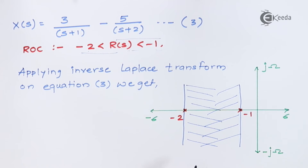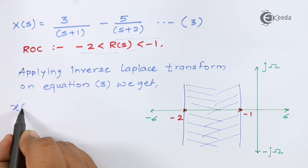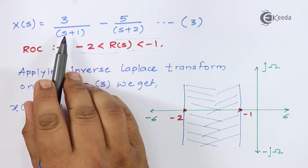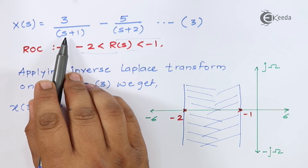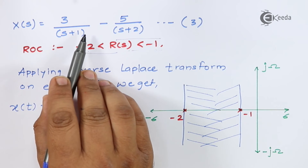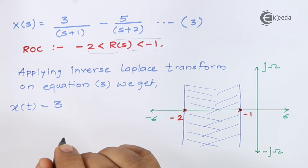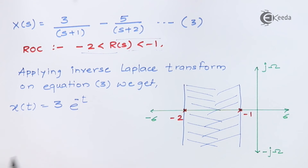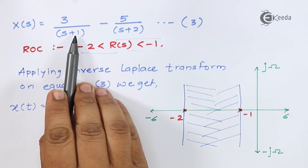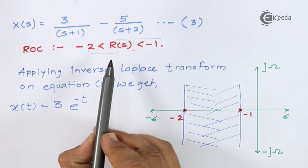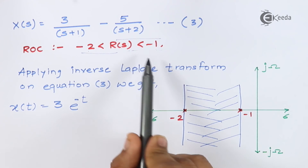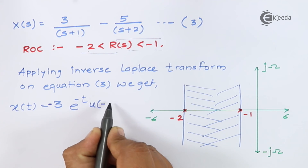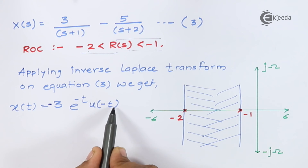The inverse Laplace of X(s) is x(t). Taking the constant 3 outside: for 1/(s+1), the shift is +1 so the exponential is e^(-t). Since the pole at -1 produces a left-sided ROC, the unit step is replaced by -u(-t). So the first term is 3 × e^(-t) × (-u(-t)), i.e., -3 e^(-t) u(-t).